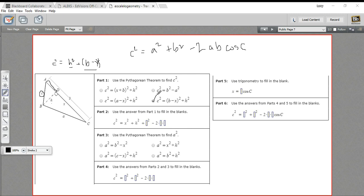Let's try part two here. It says use the answer from part one to fill in the blanks. And they've got c squared and x squared and h squared and something else squared and negative two times something else. So this step might be confusing. What they're asking you to do here is just multiply out this part and rewrite it. So we're just going to square b minus x. So b minus x squared is b minus x times b minus x.